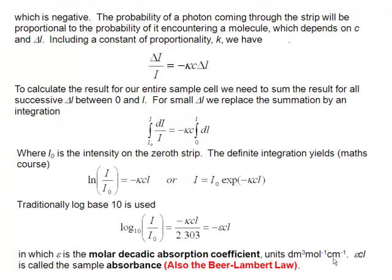So if we want to know the total transmission of our entire sample, then we just have to add together all of those individual elements. And if we make delta L very small, we don't have to sum up all those individual elements. We can replace the summation sign by an integration sign. As delta I becomes very small, we call it dI. So we integrate dI over I. And we're now calling our intensity, which hits the zeroth strip, I₀. And we integrate over all of those strips until we get to the final intensity, I.